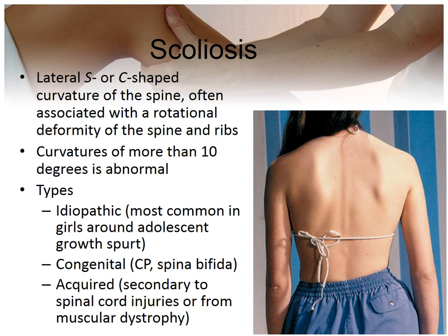Scoliosis is a common spinal deformity — a complex deformity in three planes involving lateral curvature, spinal rotation causing rib asymmetry, or thoracic hypokyphosis. It can be congenital or develop in childhood. A classic visual sign is when the child's shorts or clothing sit at an uneven angle on the hips rather than straight across.